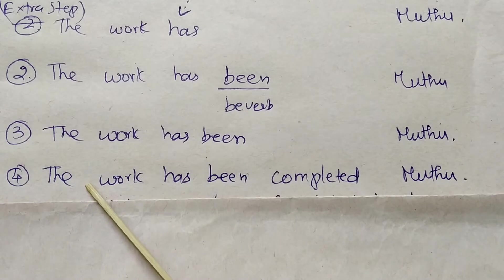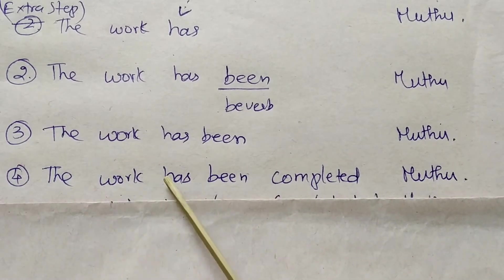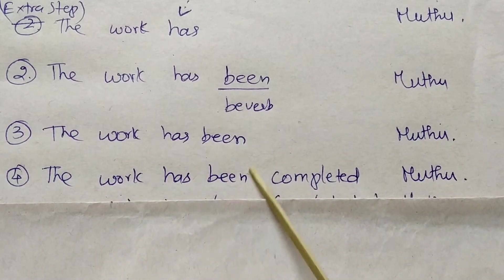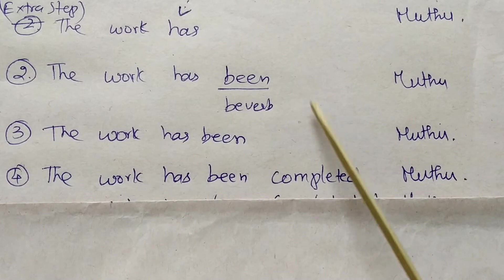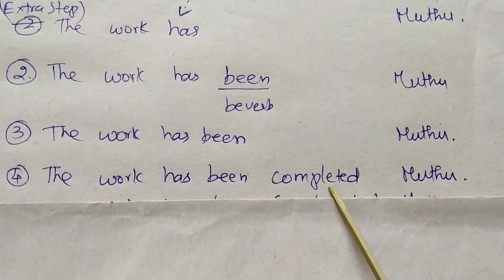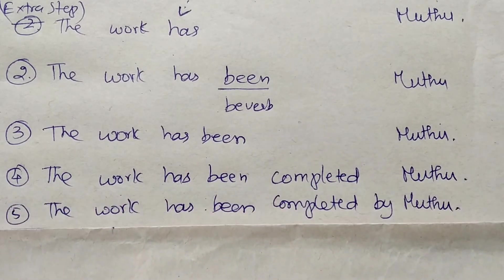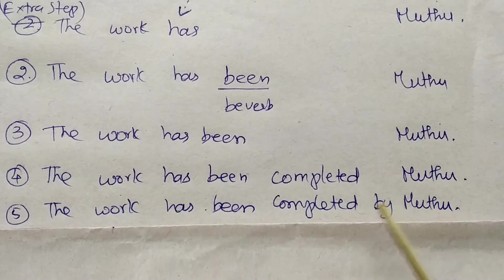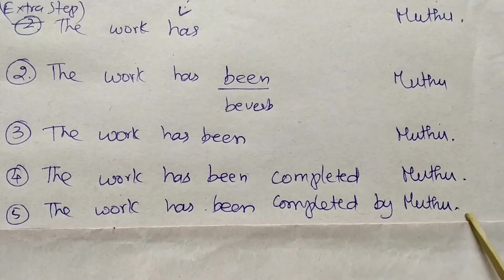The be-verb 'been' is added. 'That word has been completed.' The passive voice sentence becomes: 'The work has been completed by Muthu.'